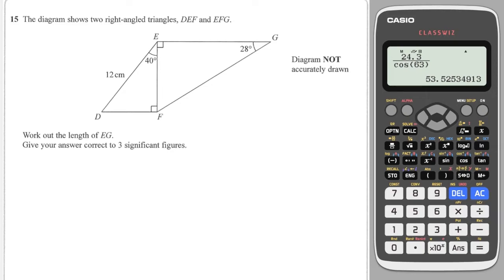For the next question, I need to work out EG, which is this side here. Let's call it X. If I look at that triangle, I don't have much to go on — I've just got the side I'm looking for and an angle, but I don't have another side. So I need to look at this triangle here in order to work out the side length EF, which we'll call Y. And once I know that, then I can use the second triangle.